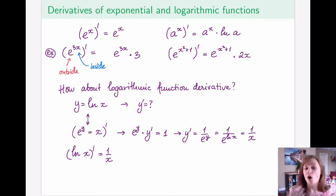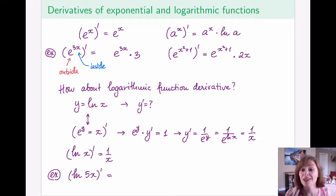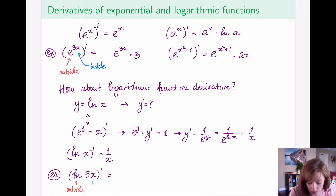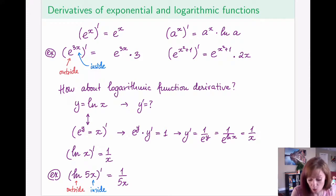All of the same differentiation rules still apply. For example, the derivative of ln(5x): here the logarithm is the outside function and 5x is the inside function. By the chain rule, we first take the derivative of the outside — the derivative of ln of something is 1 over the inside — keeping the inside intact: 1 over 5x, times the derivative of the inside, which is 5.